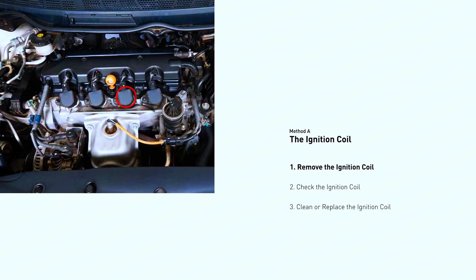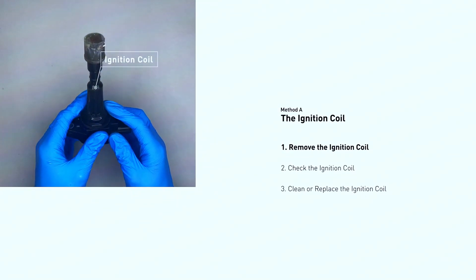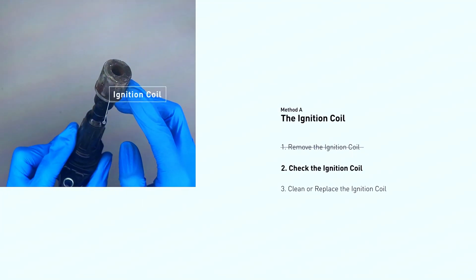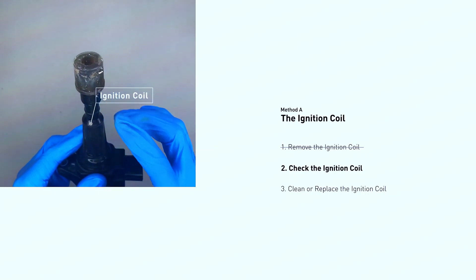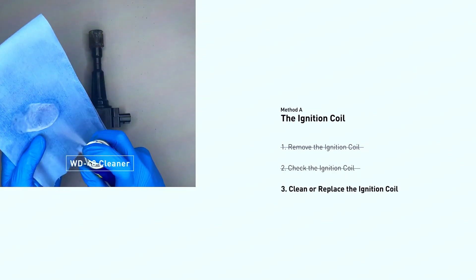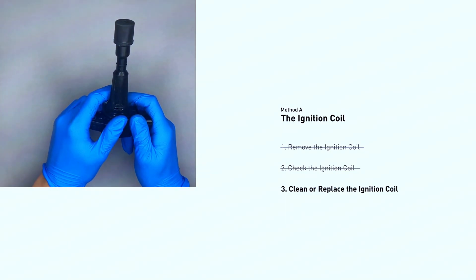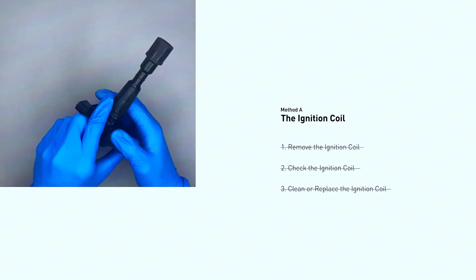If the inspection reveals a bad coil, you'll need to replace it. Replacement is fairly straightforward, but refer to your repair manual for specific instructions on how to access and swap the coil in your car. Also note that worn-out spark plugs can mimic some P0351 symptoms. Consult your repair manual for the recommended spark plug replacement interval and inspect them for signs of wear or damage. Replace them if necessary.